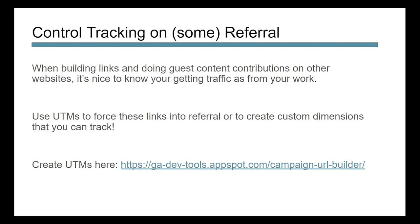One of the important things to do is to control tracking on what you can when it comes to your referral traffic. When building links or doing guest content contributions on other websites, it's nice to know if those site links are actually generating traffic. In SEO, we want to build links, but not just links for the sake of having links — we want links that are going to send qualified traffic. The one way we can do that is by adding UTMs onto those links in either our backlinking or with our guest content. You can use UTMs to force a referral link and create custom dimensions you want to track, or even create your own source medium. Use the Google UTM tool linked right here to help you create those UTM codes, and this will help you track your referral traffic at a much deeper level to make sure your links and guest content on different channels are driving the right traffic to your site.